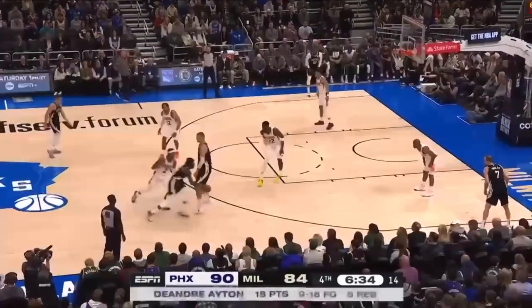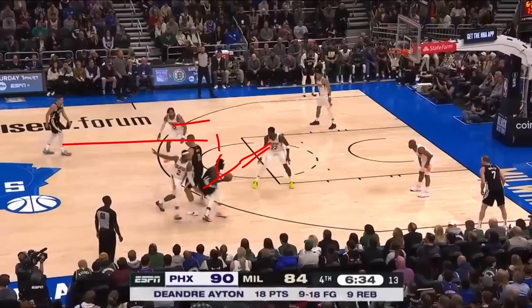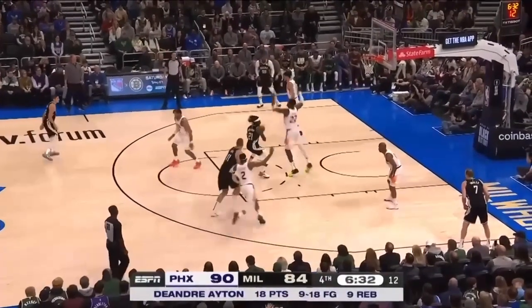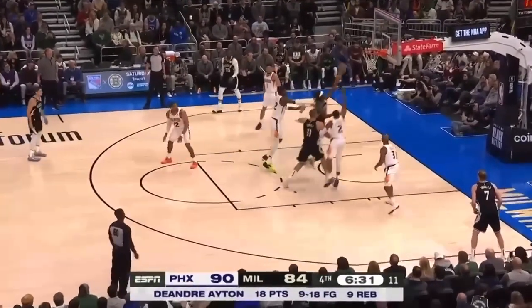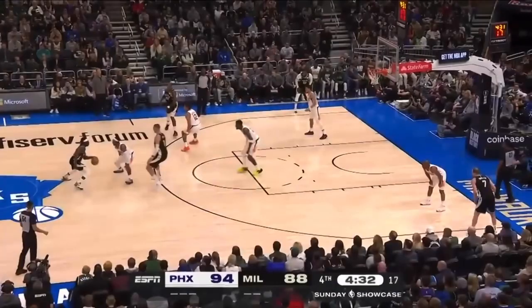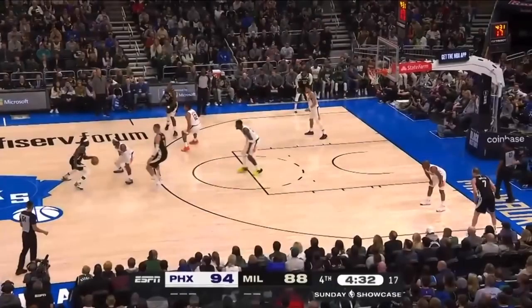You can't play off of Drew Holiday like this — you're giving him a running start to go downhill. This is already a mismatch, so this player's got to drop and be in the gaps, and DeAndre Ayton's got to be up. Now I can get up and shade him right into gap help. I can stunt and recover. But this just can't happen.